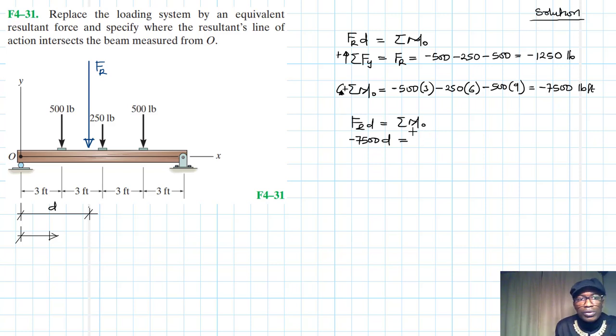Sorry, FRR is - sorry - it is minus 1250 times d equal to the summation of moments about point O, which is equal to minus 7500. And if we do our calculation we find that d is going to be equal to - what is d equal to? That's 7500 divided by 1250. So d is equal to 6 feet.